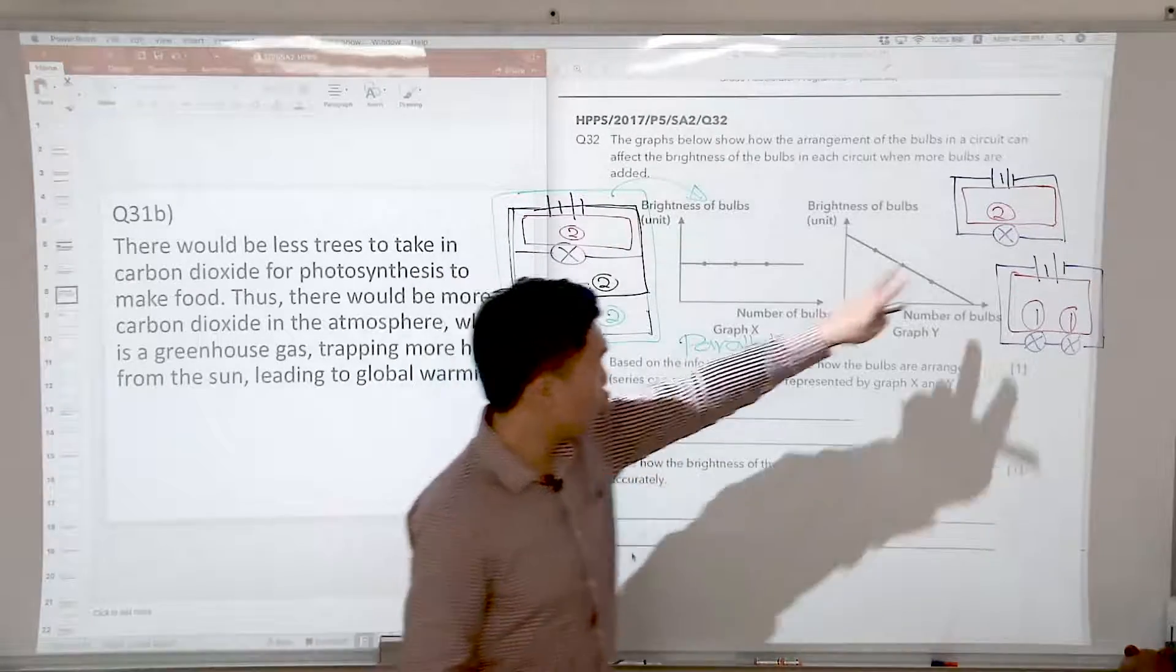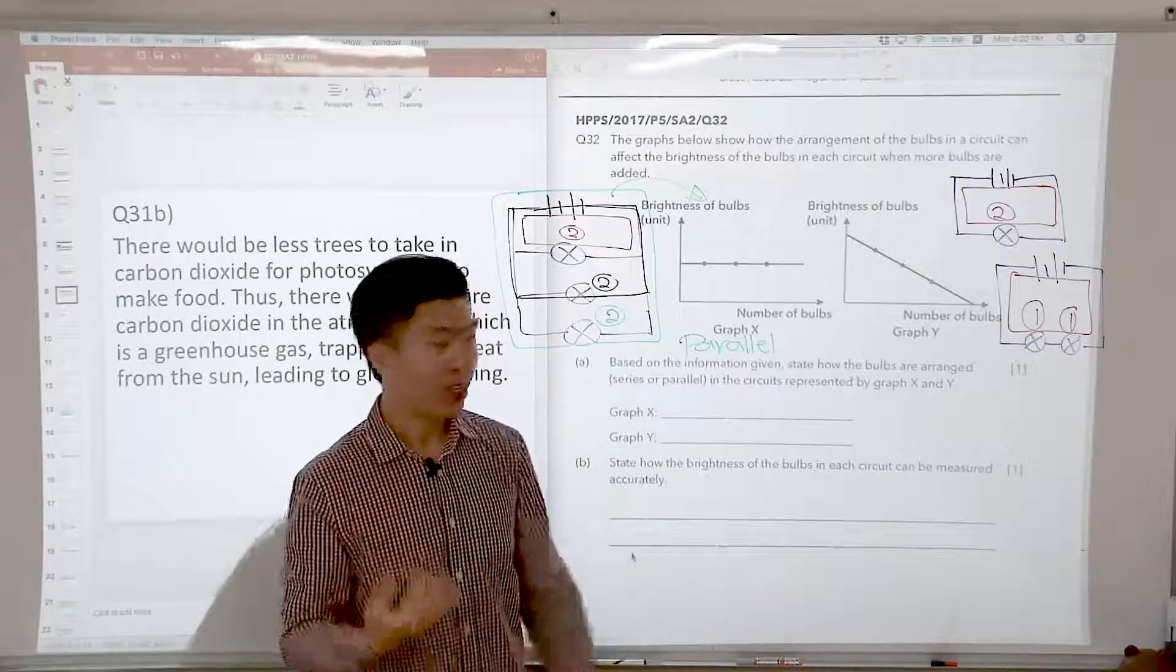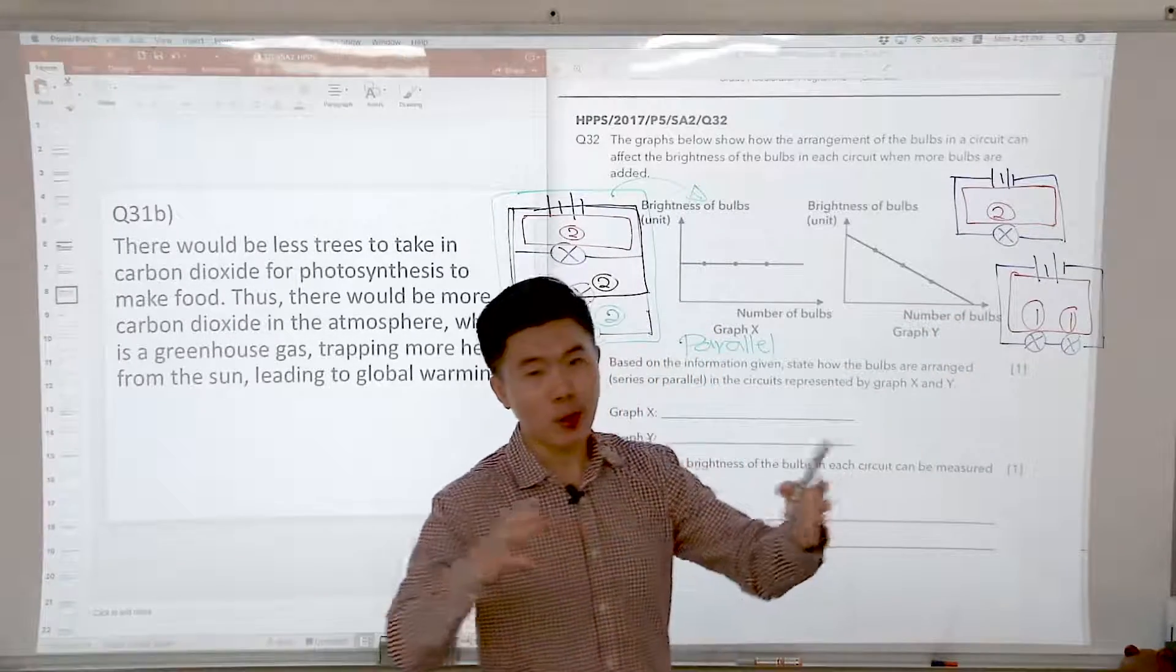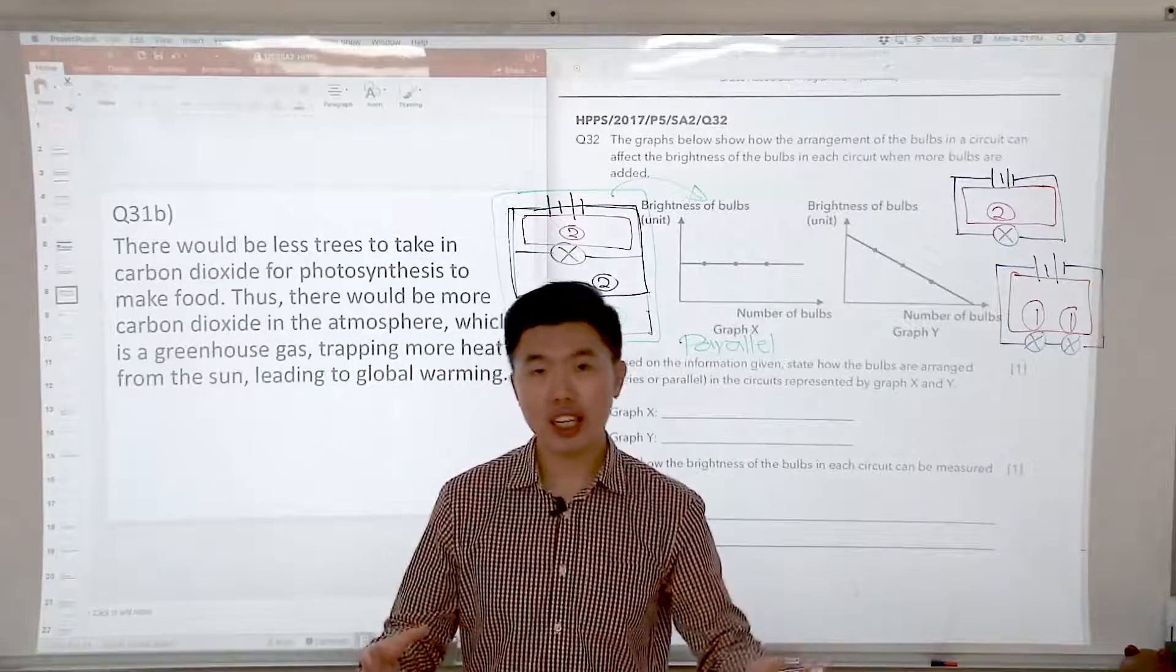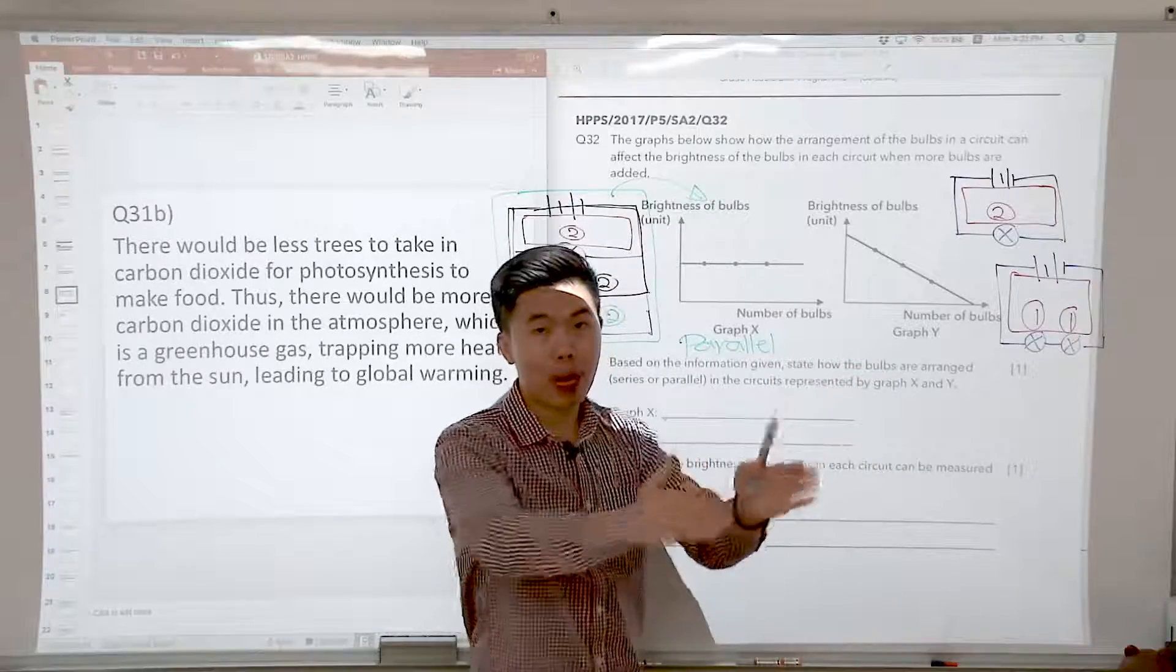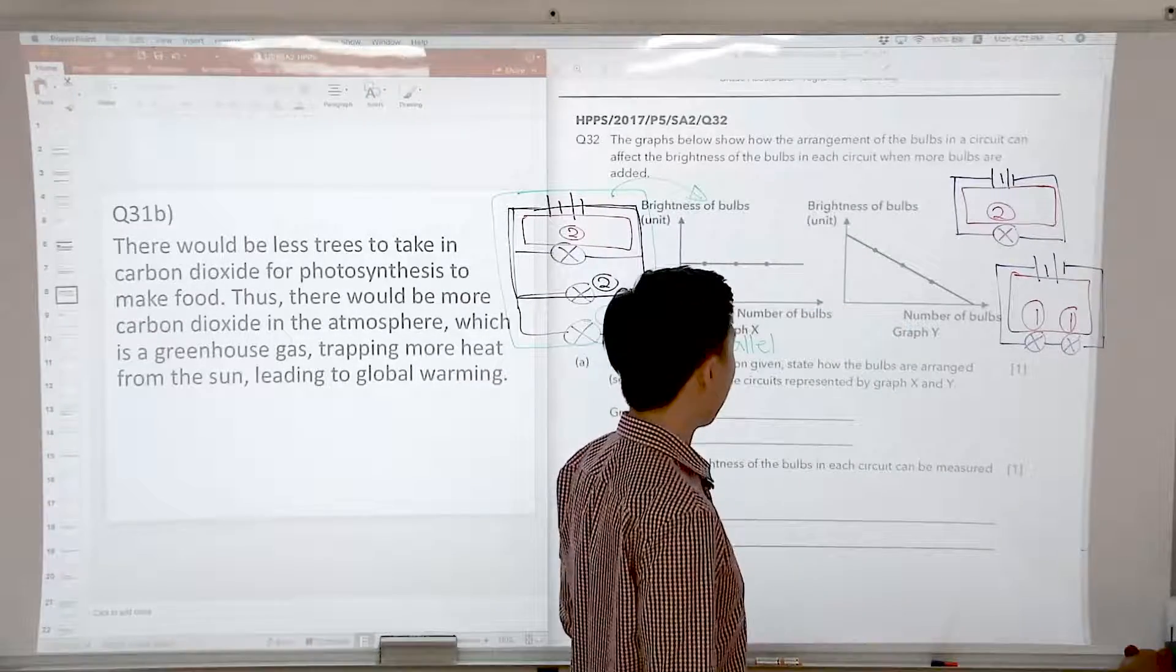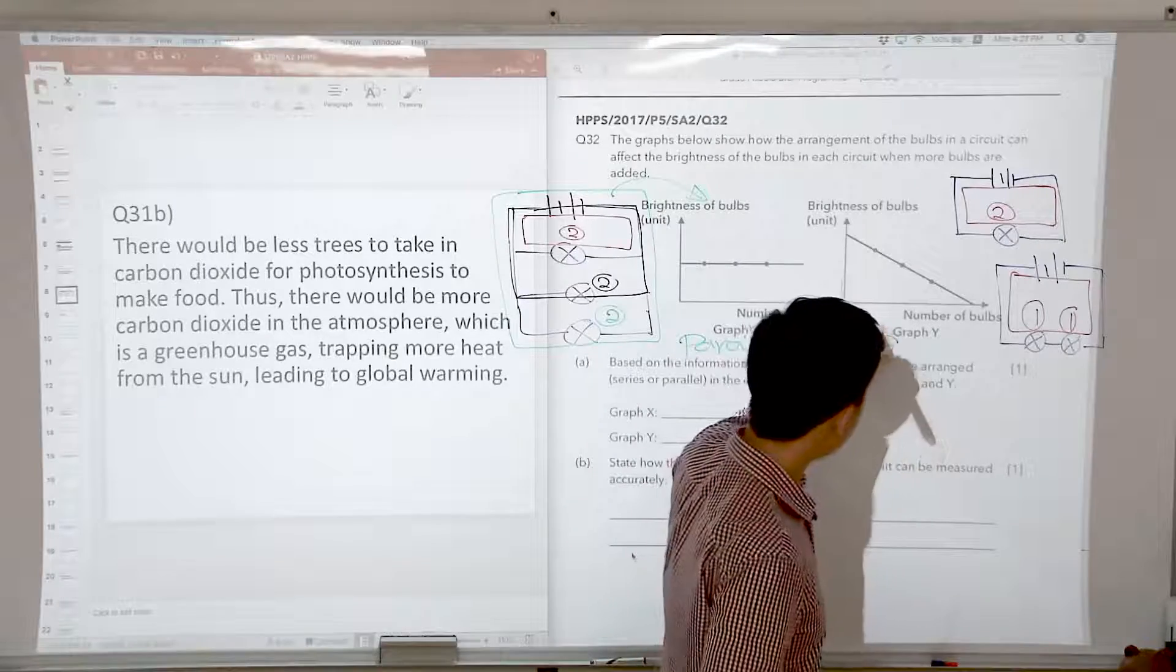If we have two batteries and three bulbs, so two divided by three, each bulb will receive a power of two thirds. So it will be even dimmer than when there were two bulbs. So as you add more and more bulbs in series, what you notice is that the electricity has to be shared by each of the bulbs that were added and the brightness of the bulbs will start to decrease. So this one here, graph Y on the right side, will likely represent the series circuit.